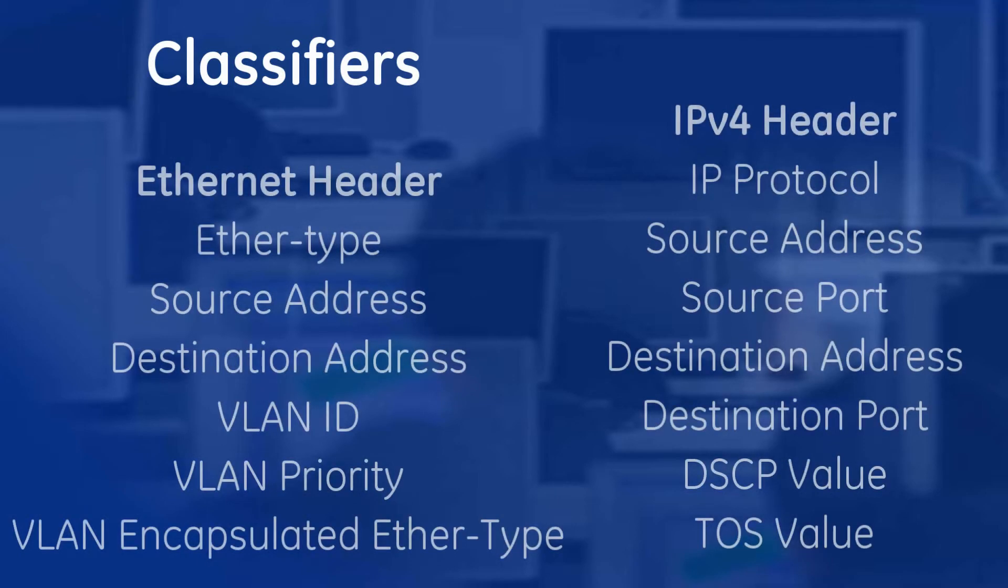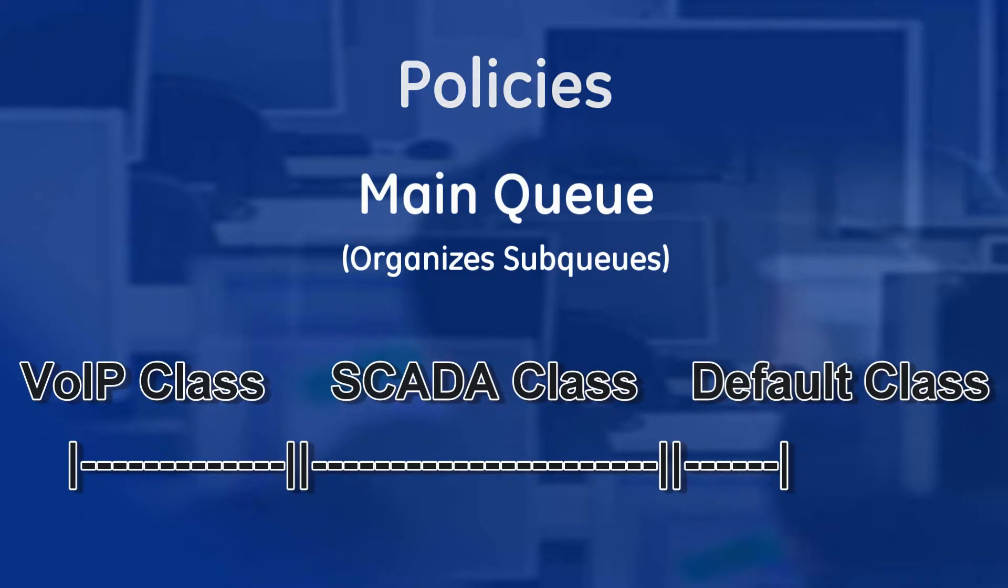Traffic can be classified on any of the shown parameters. Policies organize the classes, or sub-queues, into a main queue for processing order. The order is based on the priority value given to each class.